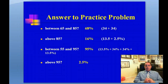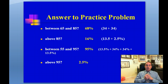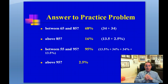When you review your answers, you should find that the percentage of students between 65 and 85 is 68%, above 85 is 16%, between 55 and 95 is 95%, and above 95 is 2.5%. Go back to the practice problem and make sure that you got all of these correct. There are practice problems in your textbook. If you have any questions or anything is unclear regarding standard deviations, normal curve, drawing the curve, percentages under the curve, and calculating them, please email me or call me so we can make an appointment.